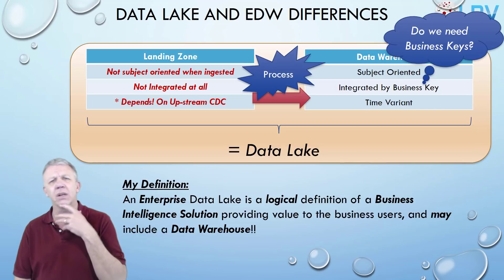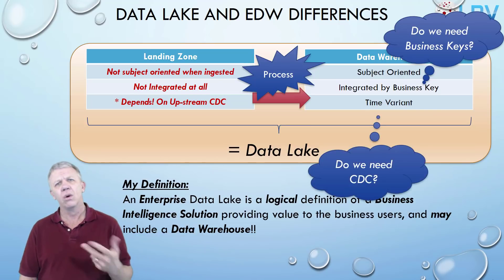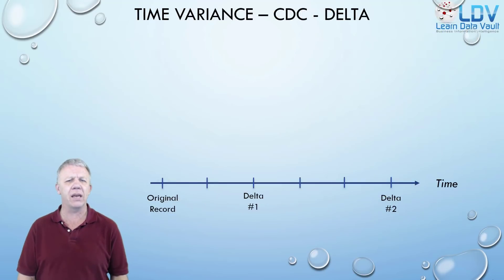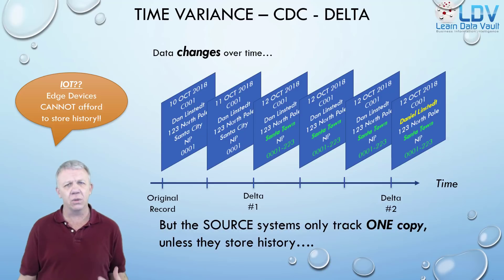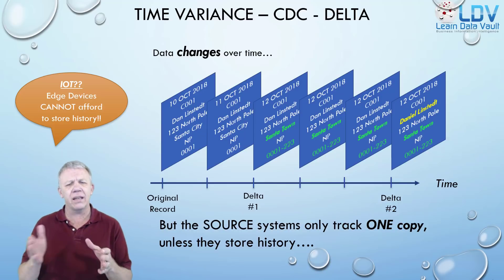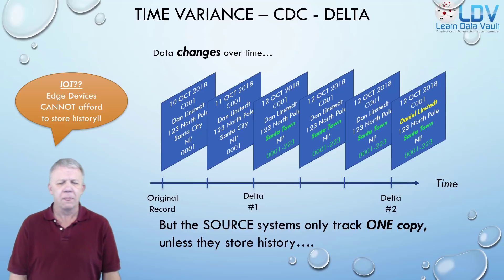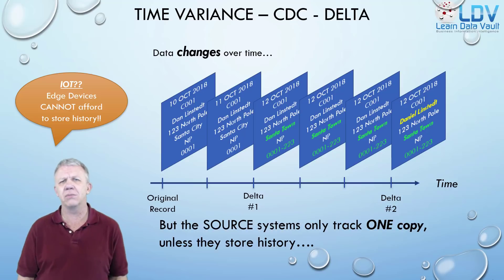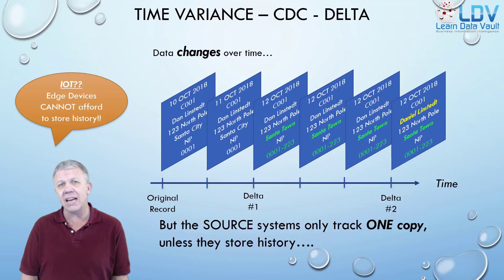For this session, we're going to talk about: do we need business keys, do we need change data capture, and if so, what are they and how do they play? We've got a timeline data set for data on the source, and you can see there are roughly six copies of this data with about three different changes. Most source systems only track the current record — unless it's a transactional history, they don't track changes over time.